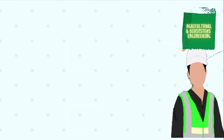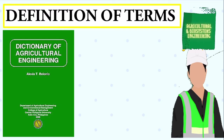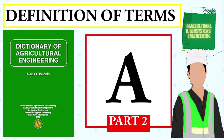Welcome to my channel. This time, we will be defining the terms related to agricultural and biosystems engineering. These terms are from Engineer Alexis T. Belonio's Dictionary of Agricultural Engineering. We will begin with the terms starting from letter A. I will define the terms two times before I will show the term being defined.